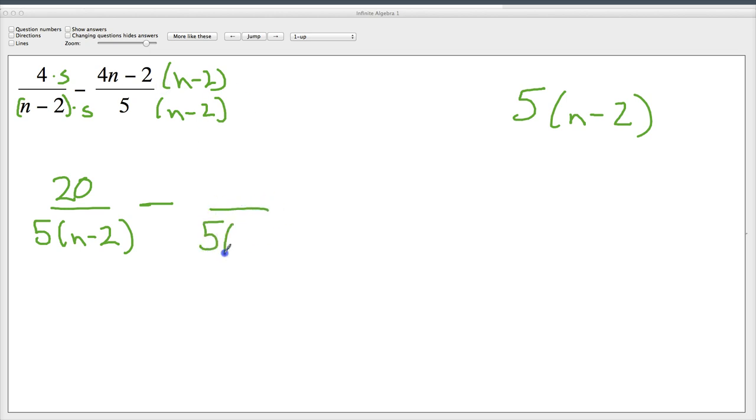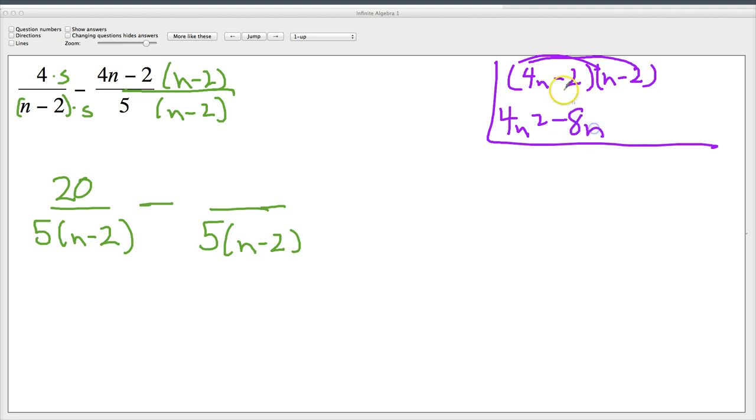The bottom part's easy. It just becomes 5 times n minus 2. On top, you're going to have to do a little bit of the foil process, or it's technically distributive property here. 4n minus 2 times n minus 2. 4n squared minus 8n minus 2n plus 4. So eventually, it all comes out to being 4n squared minus 10n plus 4. Combine like terms.